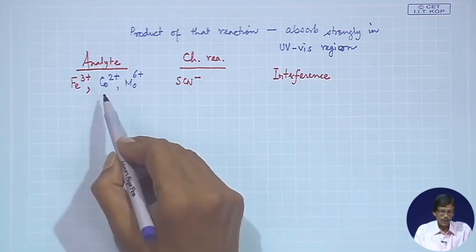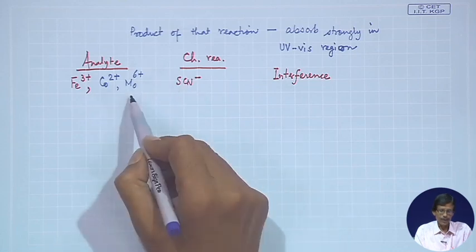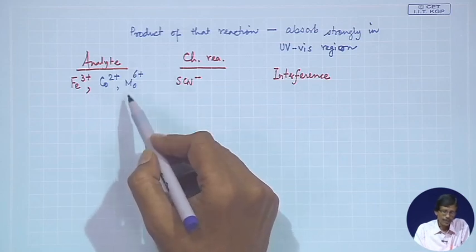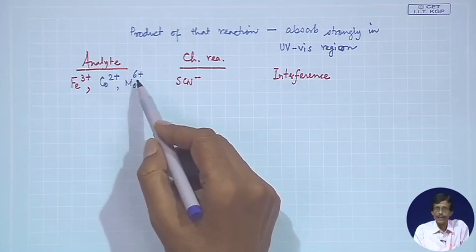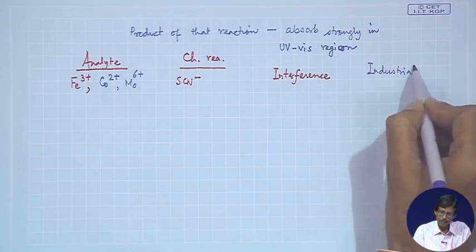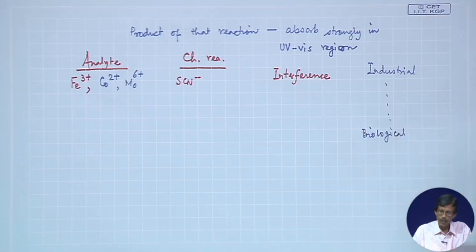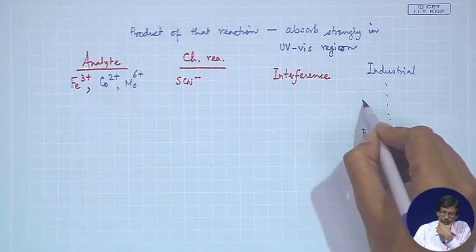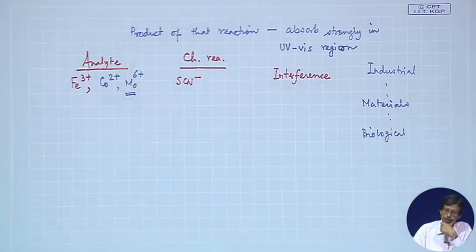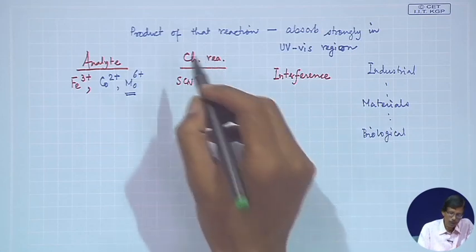Conversely, Co2+ alone can be determined using thiocyanate. Similarly, hexavalent molybdenum Mo6+ is present in many analytes — from industrial steel samples to biological molybdenum enzymes. If we want to measure the unknown concentration of molybdenum, we can safely use thiocyanate ion for that purpose.